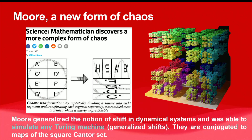Moore's thesis made the news: 'Mathematicians discover a more complex form of chaos.' Everyone would like to see their PhD thesis covered like that. What Chris Moore did was to work with the Cantor set in a more complicated manner — he considered the square Cantor set.